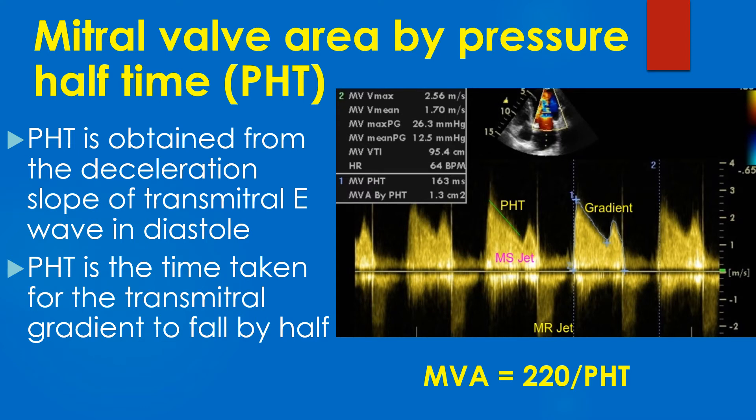PHT is the time taken for the transmitral gradient to fall by half, or the transmitral velocity to fall by root 2. A PHT of 220 milliseconds corresponds to a mitral valve area of 1 square centimeter. Dividing 220 by the measured PHT gives the estimated mitral valve area. In this case the PHT was 163 milliseconds, giving an estimated mitral valve area of 1.3 square centimeters.